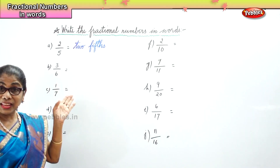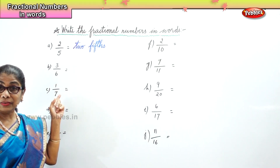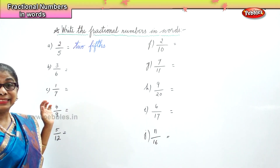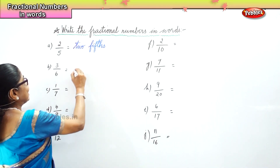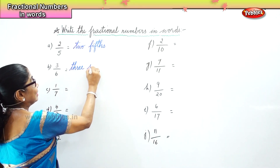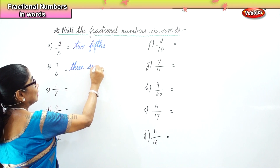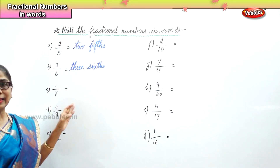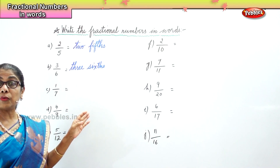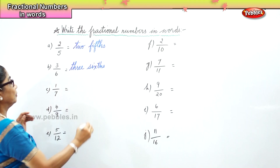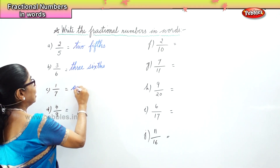Next, three parts out of six parts — you will write three sixths. And here, one part out of seven — how will you write that? One seventh.